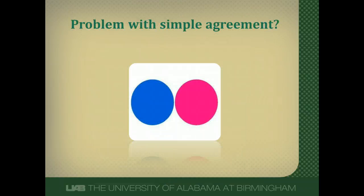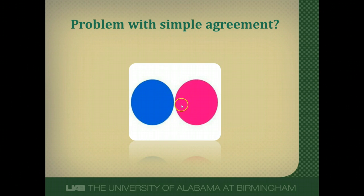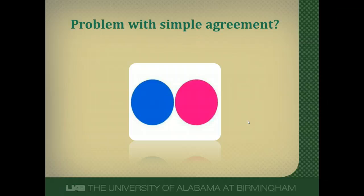Thinking back to simple agreement — that percentage of times multiple clinicians agree on a finding — there's a problem with it. To demonstrate this, let's say I have either a pink ball or a red ball behind my back and I want you to guess which it is. Now let's say I actually had a blue ball. If I had a bunch of people in the room asking them to guess, there would be several that guess blue — not because they had any skill or knowledge, but purely by chance. That's the problem with simple agreement: you can totally guess and agree with someone without any skill or knowledge of the real value.